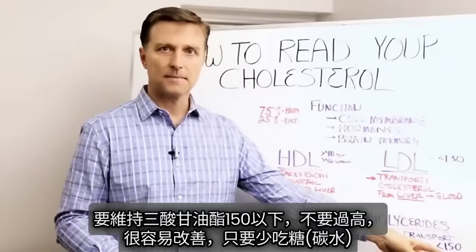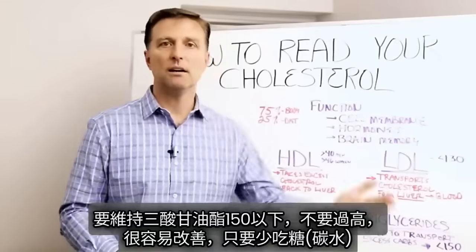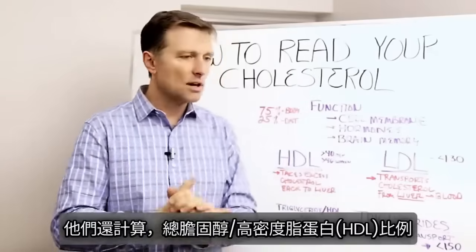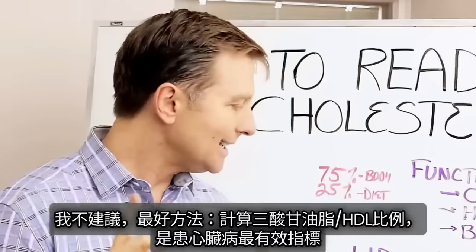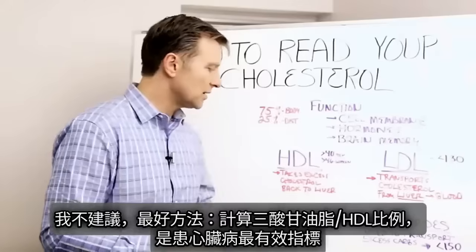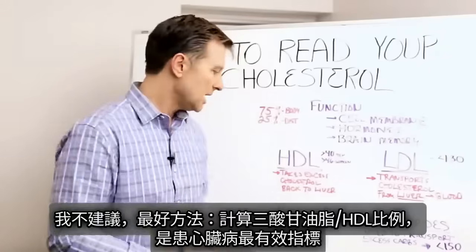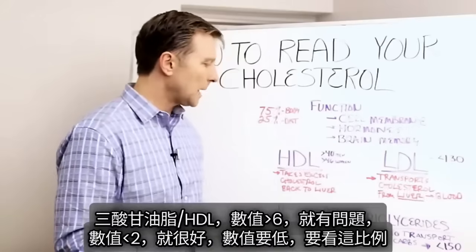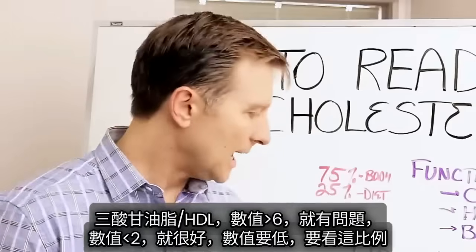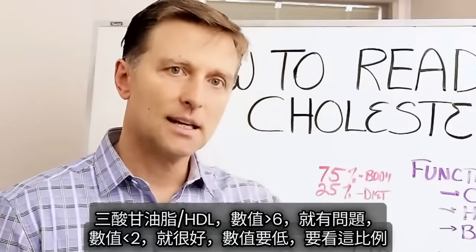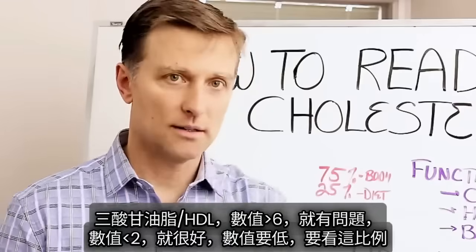If you have high triglycerides, I know for a fact you have too much sugar in your body, because the hormone insulin is the converting hormone that makes triglycerides high. It's very easy to change this — simply by getting rid of sugar from the diet. I like the triglyceride to HDL ratio the best; this gives the best indicator of your risk for heart disease. You divide your total triglycerides by the HDL and that gives you the ratio. If it's greater than six, there's a problem. If it's two or less, it's good.